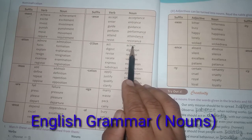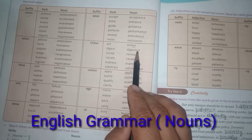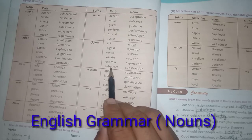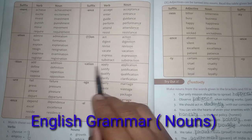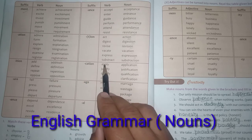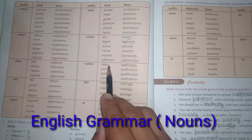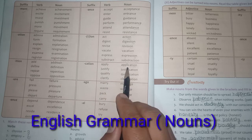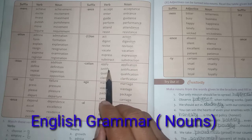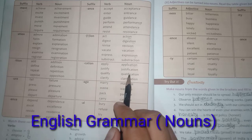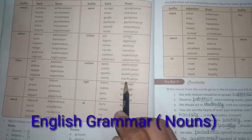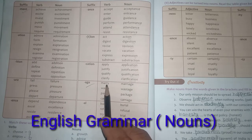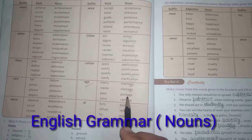Adding -ion: act → action, digest → digestion, revise → revision, vacate → vacation, express → expression, subtract → subtraction. Adding -ication (removing y): apply → application, justify → justification, qualify → qualification, clarify → clarification. Adding -age: marry → marriage, waste → wastage, pack → package, carry → carriage. Adding -al: bury → burial, refuse → refusal, address → address, try → trial, propose → proposal.